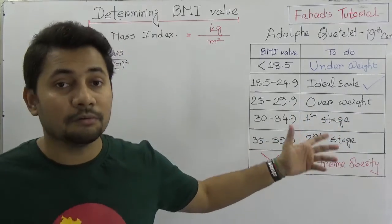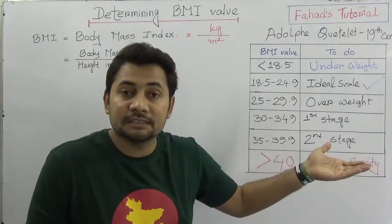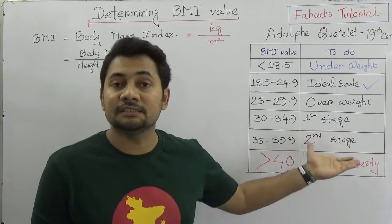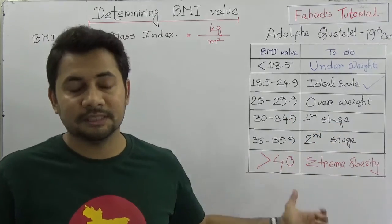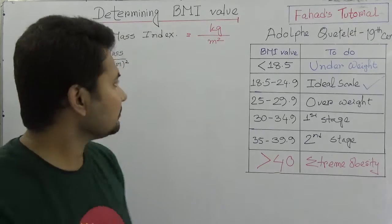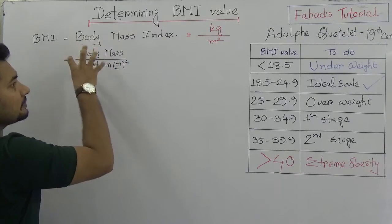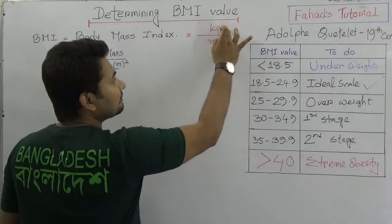Or just first stage of obesity, second stage of obesity, or extreme obesity. So how do you measure? Think about a very simple formula: that the body mass.